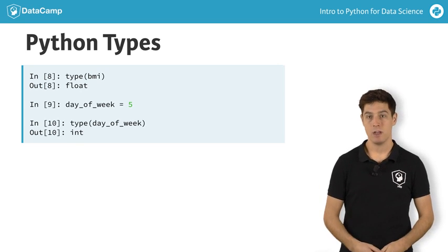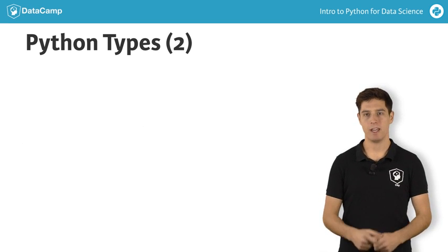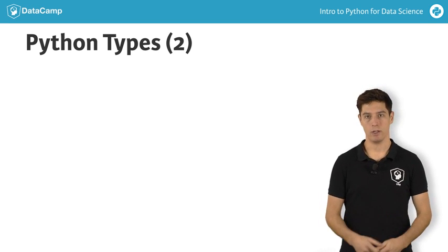To do data science, you'll need more than ints and floats, though. Python features tons of other data types. The most common ones are strings and booleans.